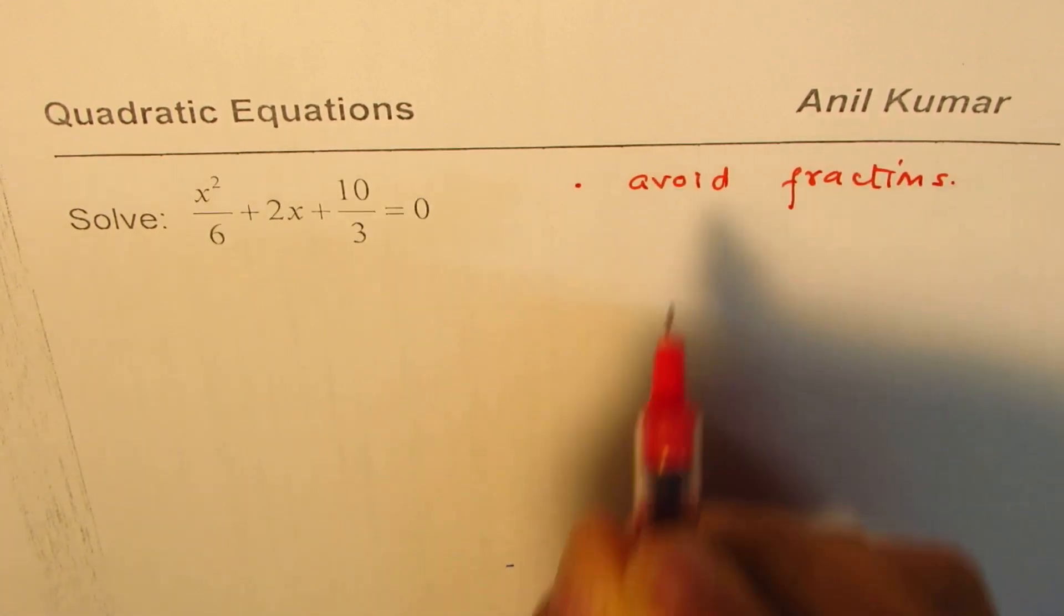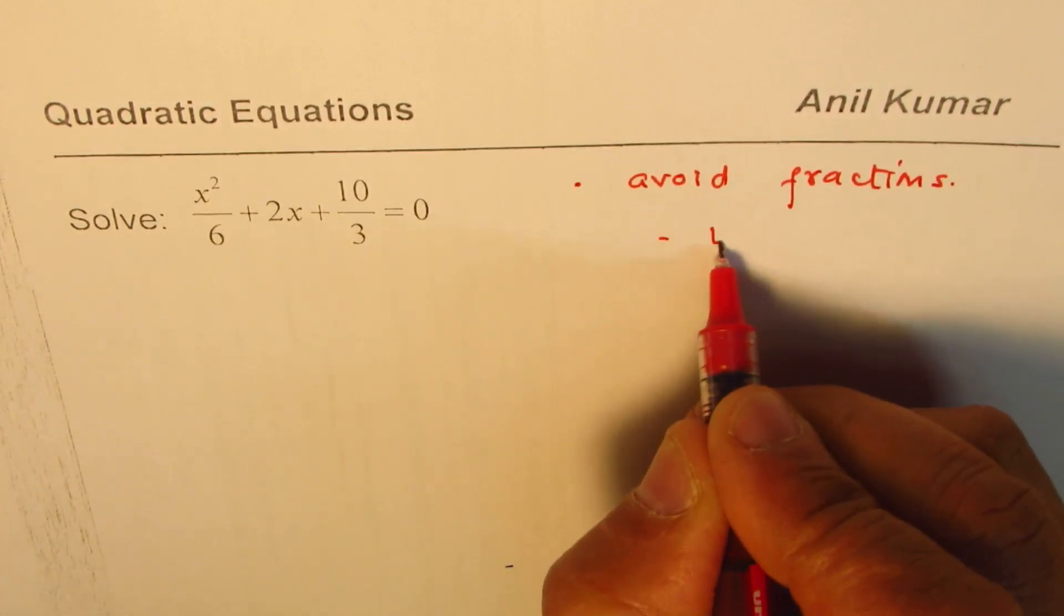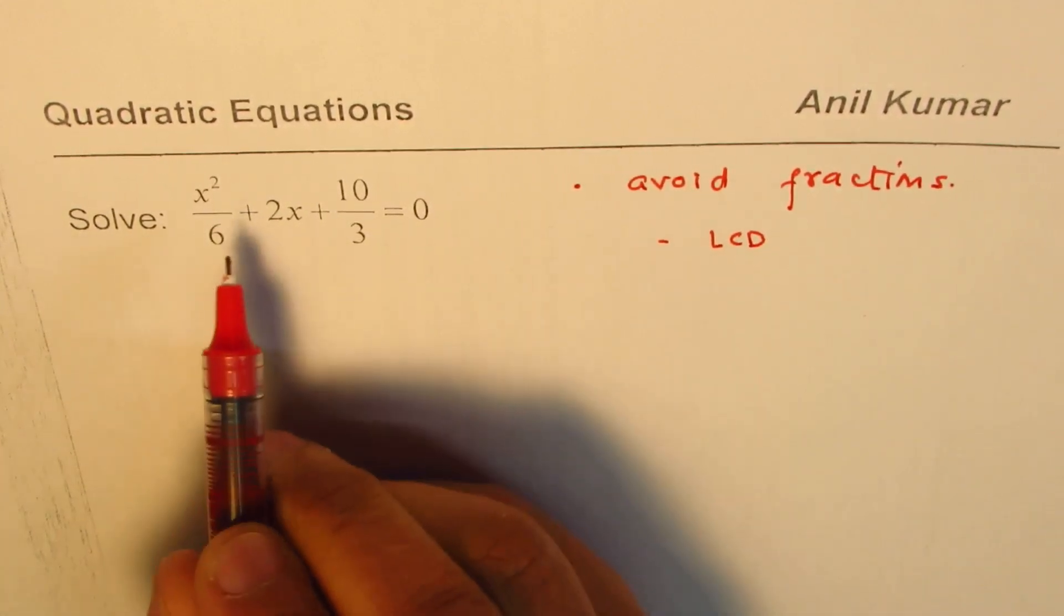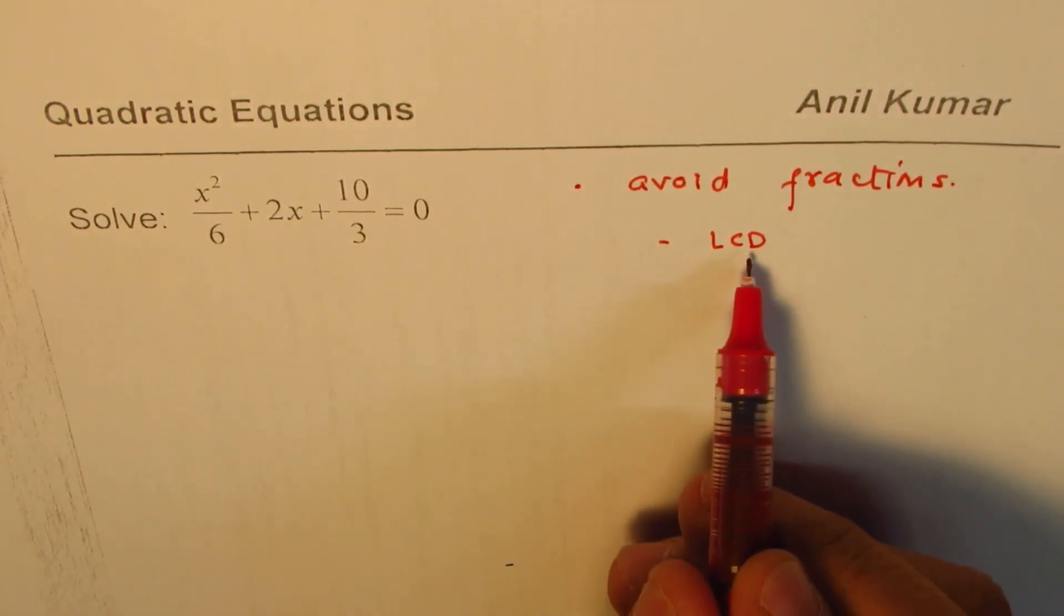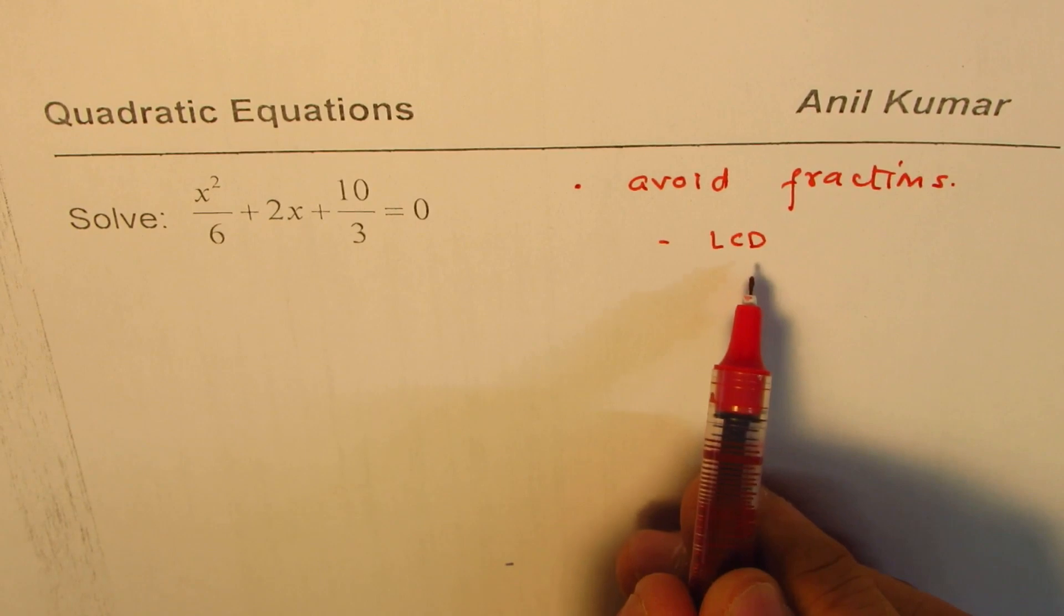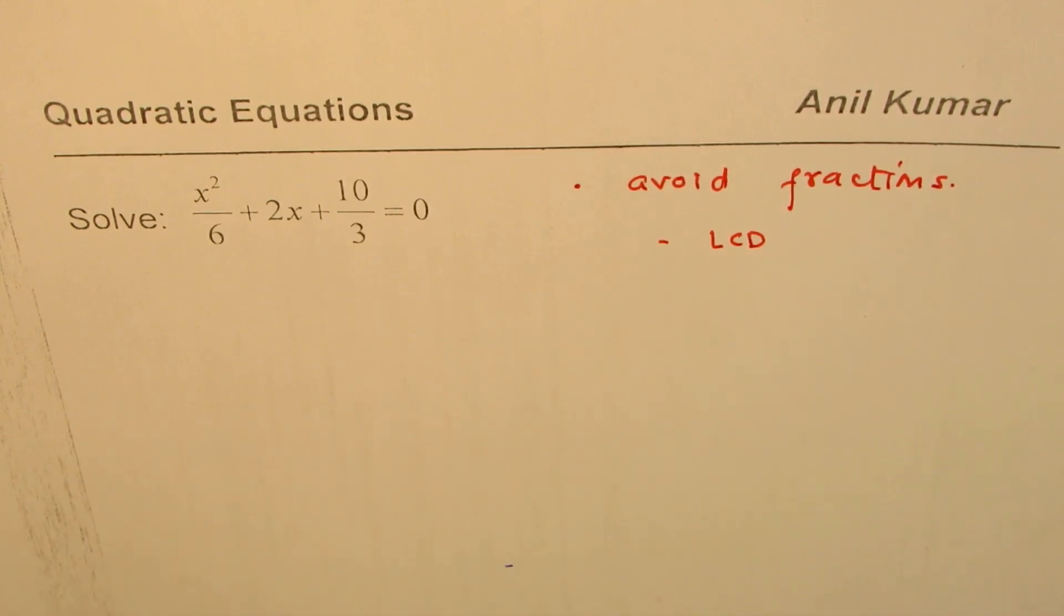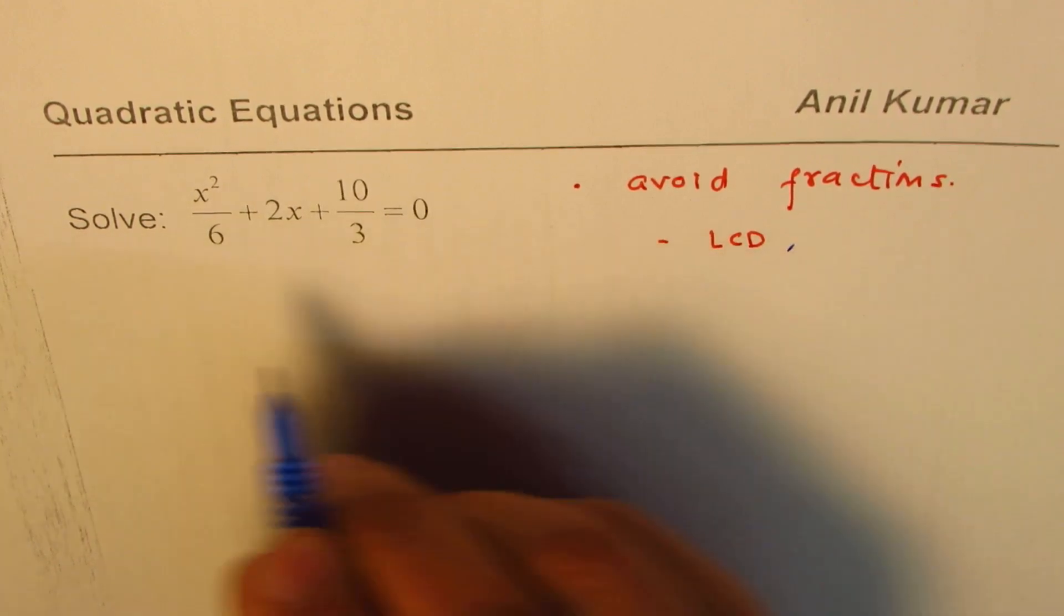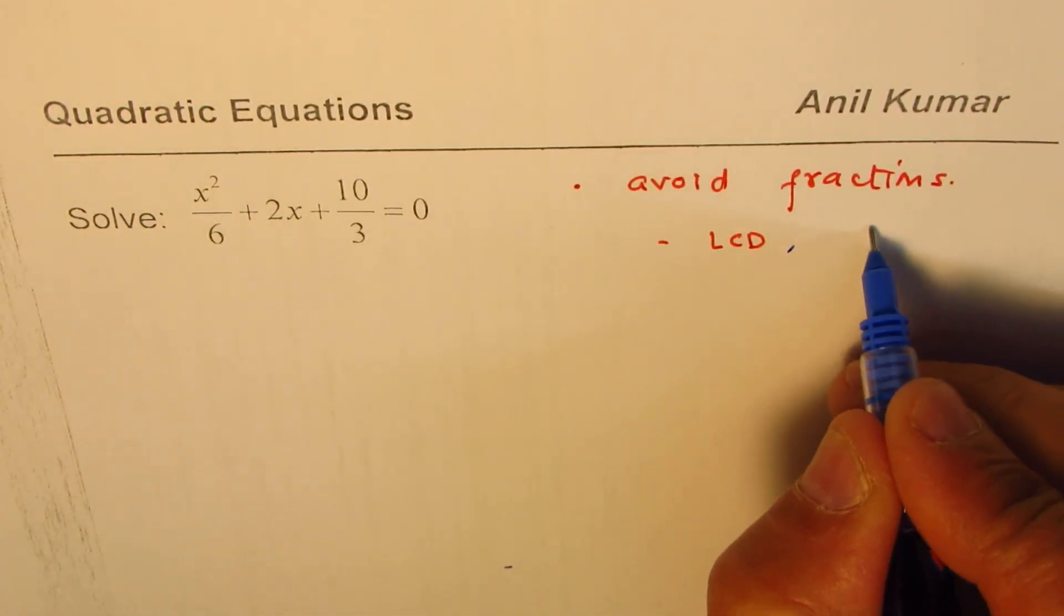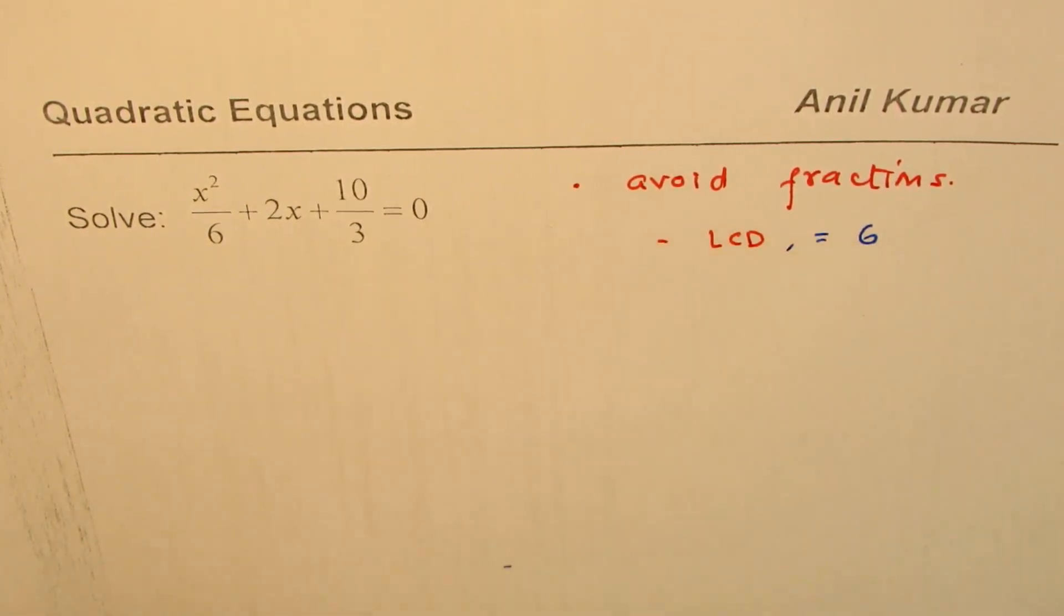How can we do it? We can find the lowest common denominator and multiply each term by lowest common denominator to avoid fractions. In our case, 6 and 3, so the lowest common denominator is 6 for us.